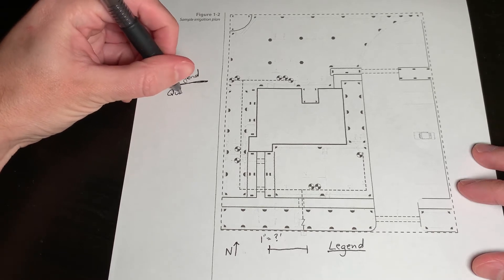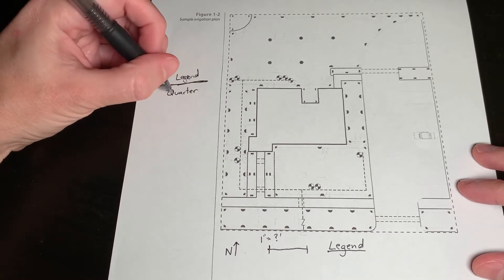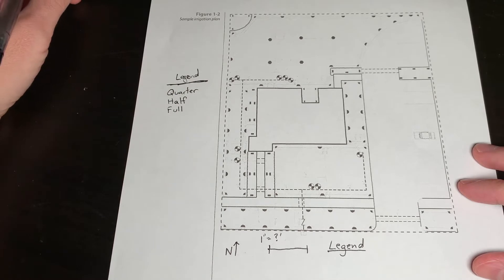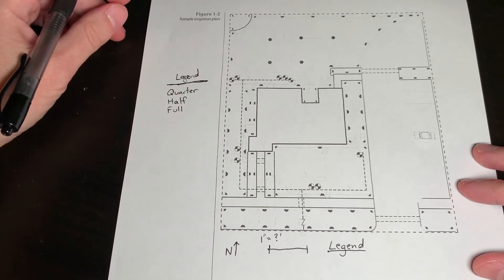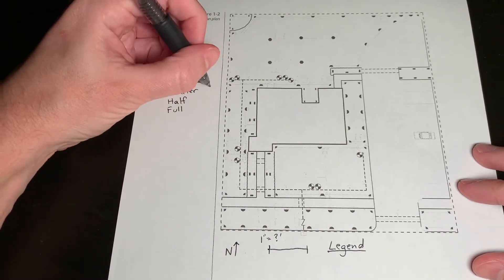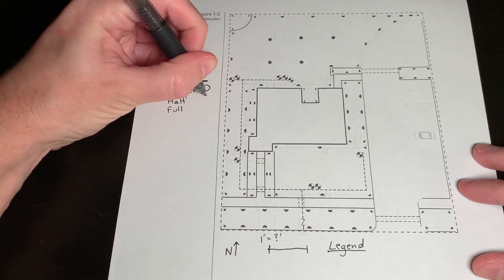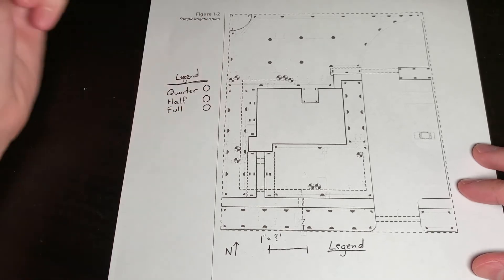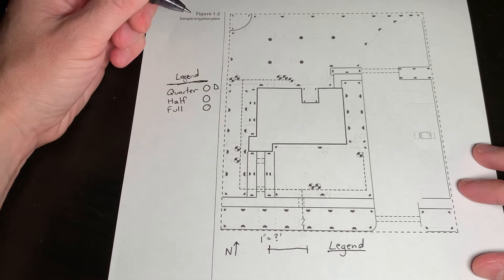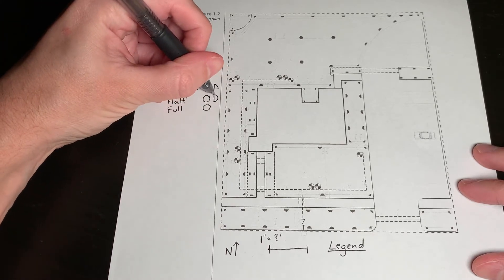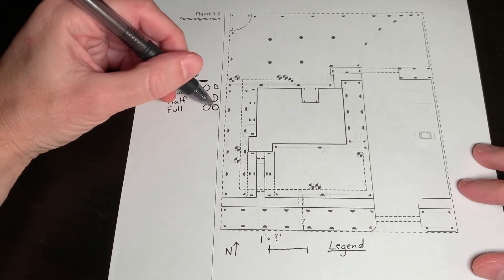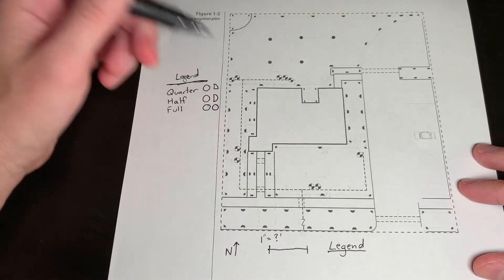Typically, we have quarter, half, and full. And so what each of these are is how much of a circle is the radius being thrown. And you can choose a couple different ways to represent them. Oftentimes, a quarter is just simply a little pie shape. The half is a half circle, and then the full is a circle. In this case, they are octagons.